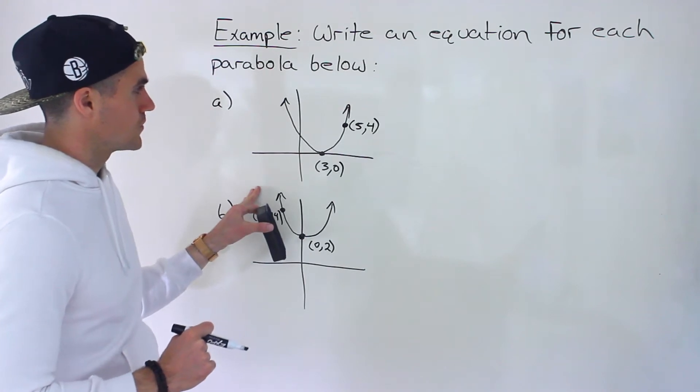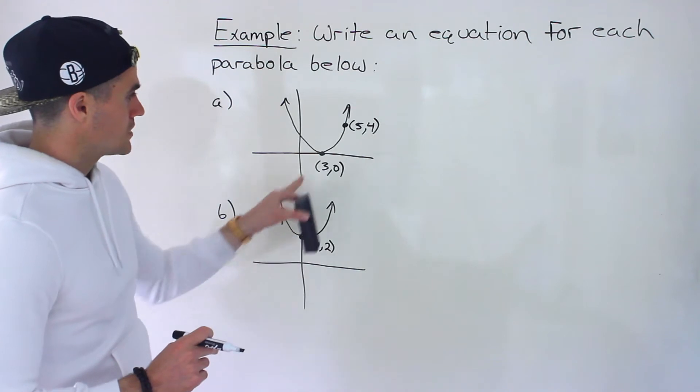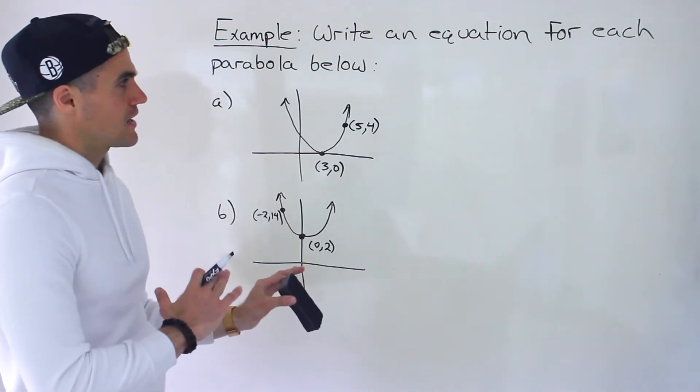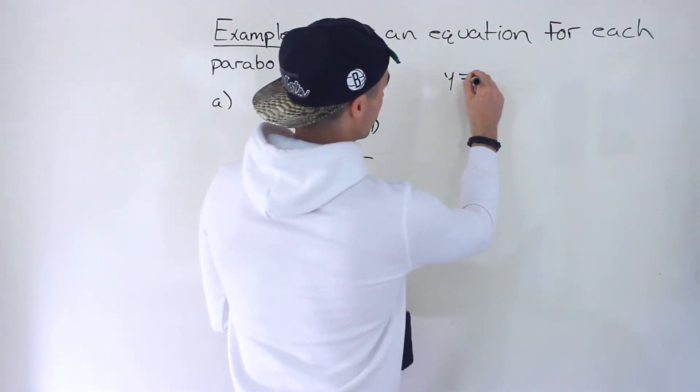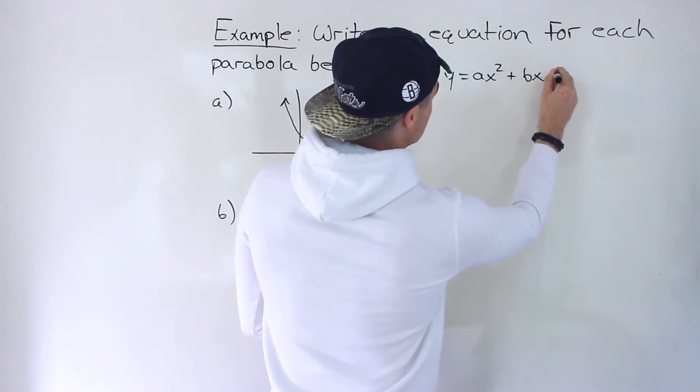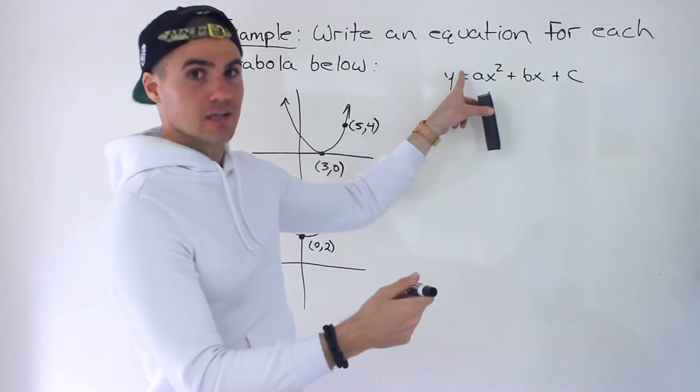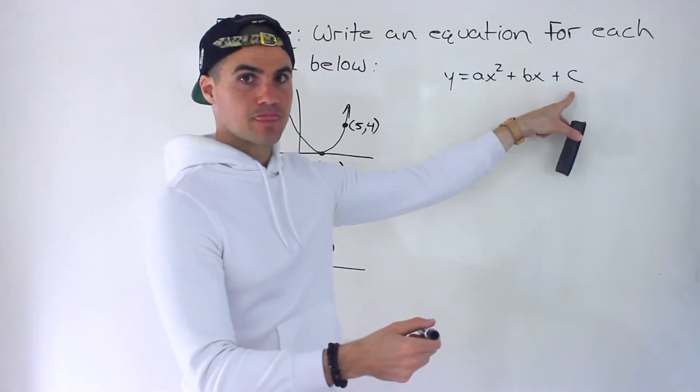So these are the first two over here. Now notice we're given points on these parabolas. We're given two points. Usually in previous sections, what we've done is we've taken three points and found the equation, but the equation wasn't standard form. So we have to find that A, B, and C value.